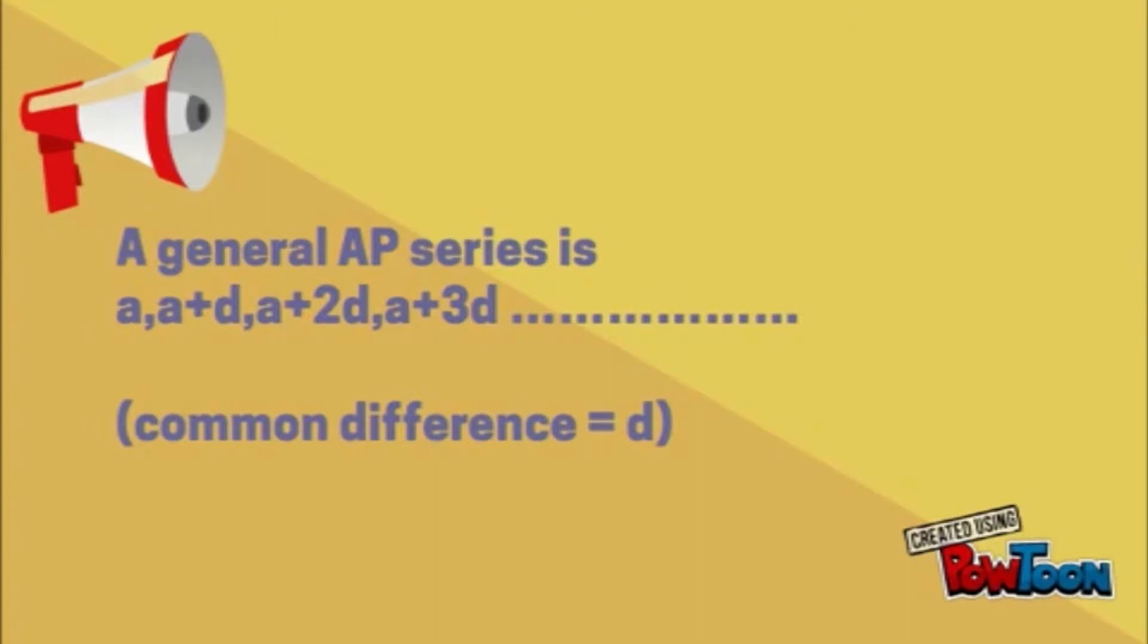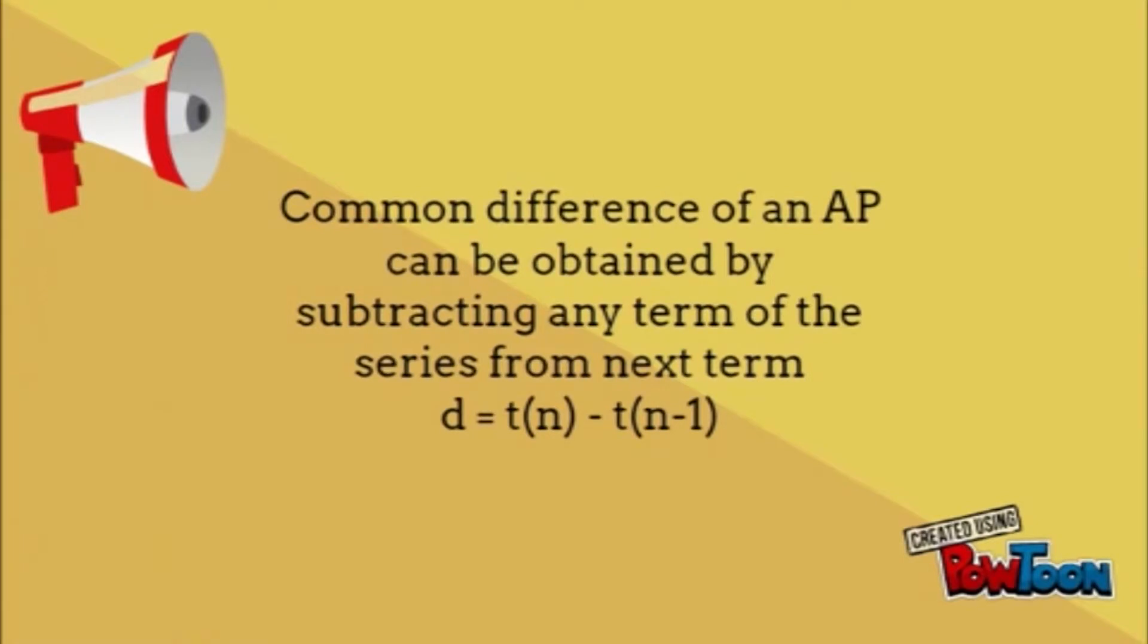Now, how can we calculate the common difference? Common difference of an AP can be obtained by subtracting any term of the series from the next term. So, d is equal to nth term minus (n-1)th term.